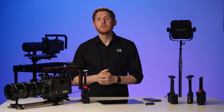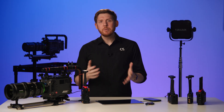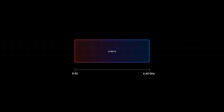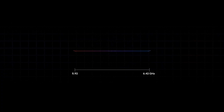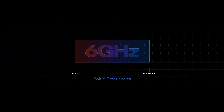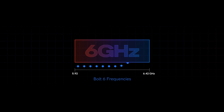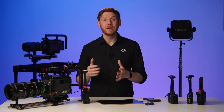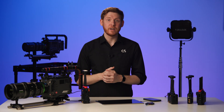Here's the good news: governments around the world are opening up a new range of frequencies for public use. This new range is called Uni-5, but you can call it 6 GHz. For Bolt, this means 12 new frequencies to help you pick the best one in your area.